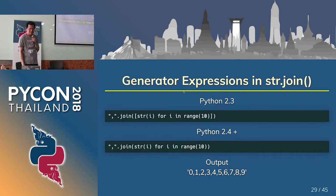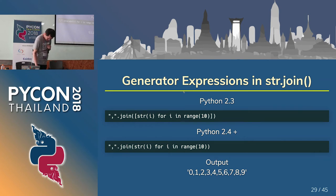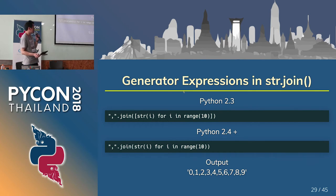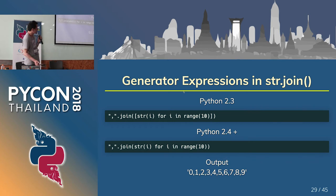Generator expression in str.join: sometimes I see join with list comprehensions — this is the old style. This does not require list comprehension. It is perfect to just use parentheses — the bottom style. They have the same meaning.